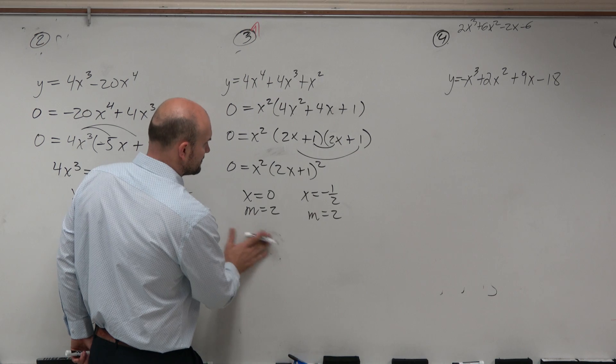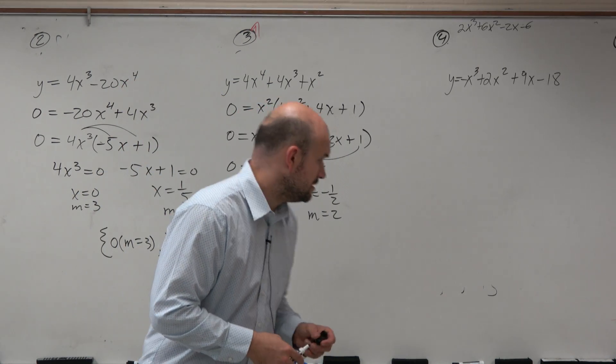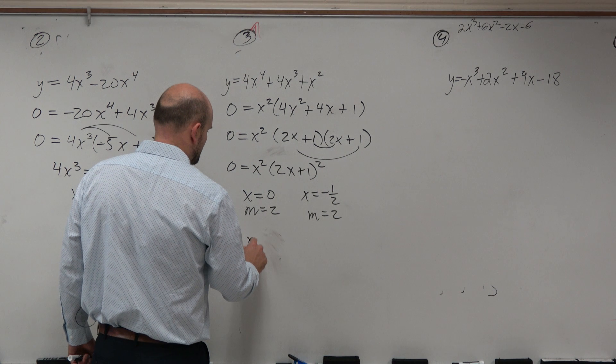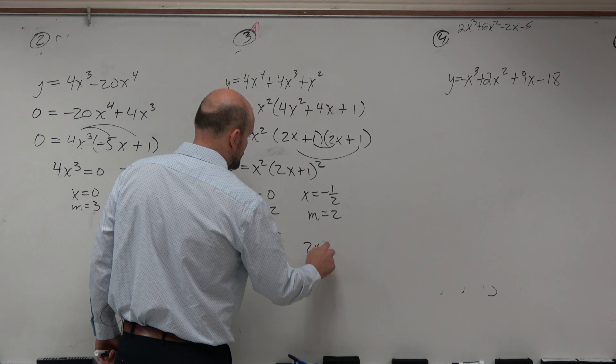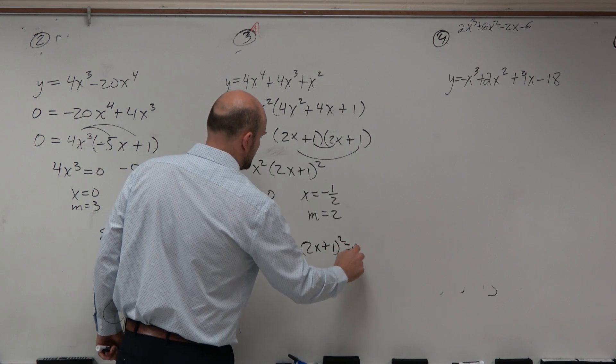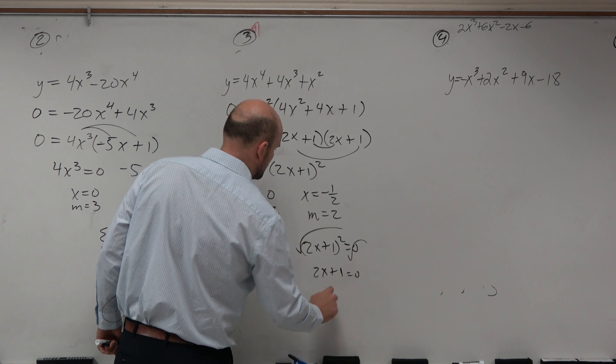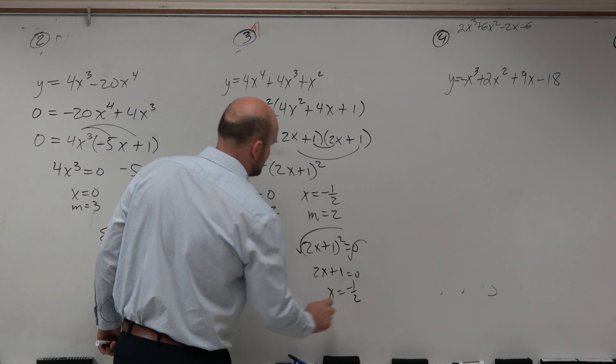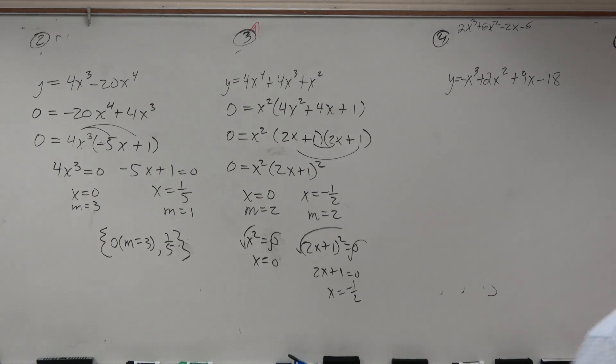Actually, you know, I'll just leave it like that. That's fine. Is everybody OK with that? Yeah? Basically, x squared equals 0, square root, square root, x equals 0. 2x plus 1, squared equals 0, square root, square root, 2x plus 1 equals 0, right? So I just didn't show my work just to, sorry about that.